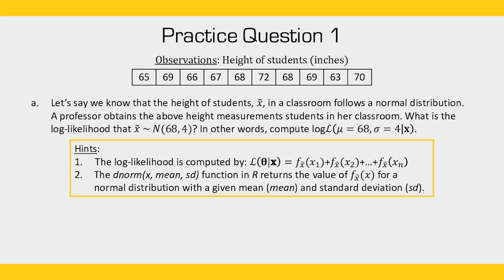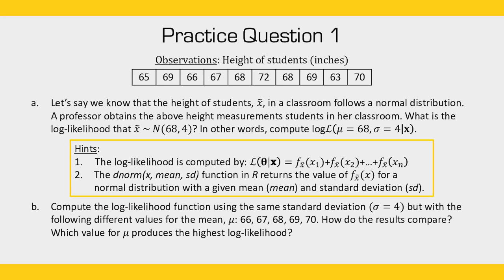For practice question one, let's say we know that the height of students — a random variable x in a classroom — follows a normal distribution. A professor obtains some height measurements in inches. What is the log likelihood value that x follows a normal distribution with a mean of 68 and a standard deviation of 4? I've given hints on how to calculate this, and the dnorm function in R returns the value of f(x) for a normal distribution with given mean and standard deviation. For question two, compute the log likelihood using the same standard deviation but with different mean values ranging from 66 to 70, and identify which mean produces the highest log likelihood.